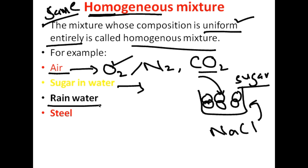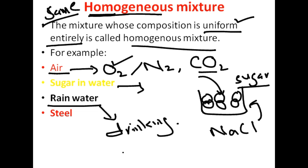For instance, if we have rainwater and drinking water such as bottled Nestle water, and we place them together, we cannot differentiate between them because their composition is essentially the same — entirely uniform. Similarly, steel is an alloy and is also a homogeneous mixture.